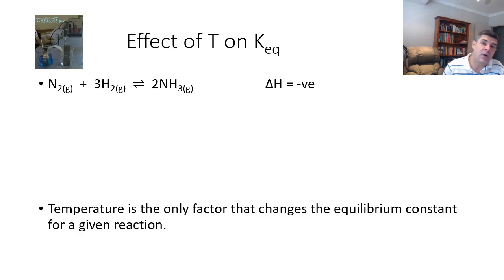At the end of the last video we were having a look at what sort of qualitative information we can get from the value of K. When the value of K is very large, the position of equilibrium lies far to the right and favors the products. When the K value is very small, it lies to the left and favors the reactants.